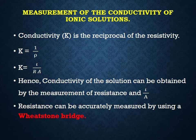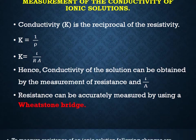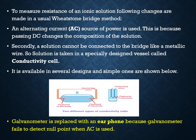Resistance can be accurately measured by using a Wheatstone bridge. To measure the resistance of an ionic solution, following changes are made in the usual Wheatstone bridge method. An alternating current source of power is used, because passing DC changes the composition of the solution.